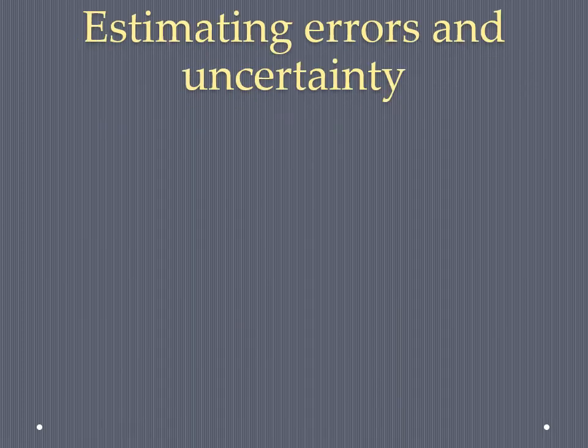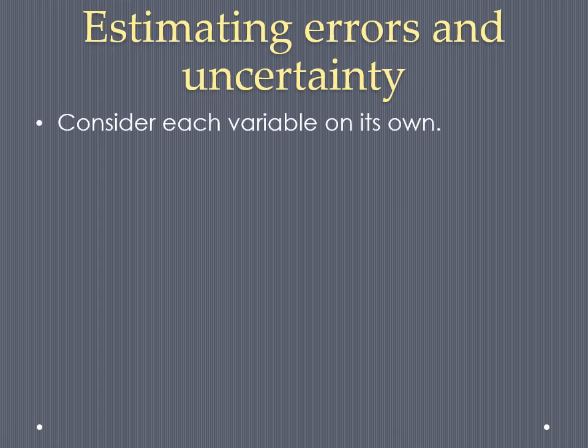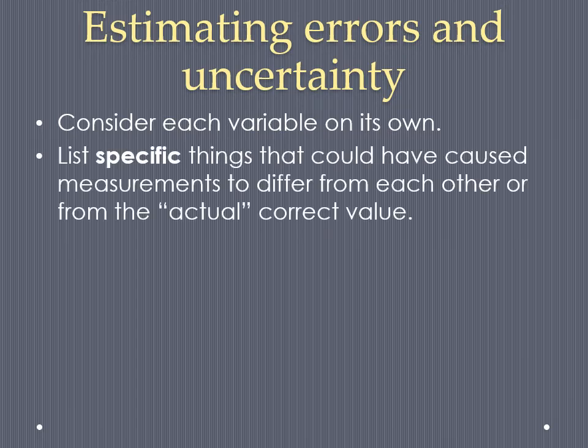One thing you probably didn't do a whole lot of in middle school was estimating errors and calculating the amount of uncertainty that results from errors in your experiment. The way that I would expect you to do this is to think about each variable that you took for your data table, list all the specific things that could cause measurements to differ from each other or from the actual correct value.